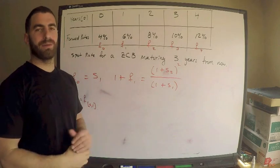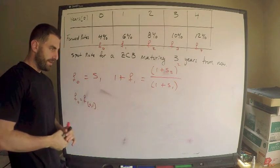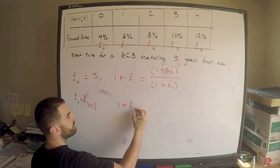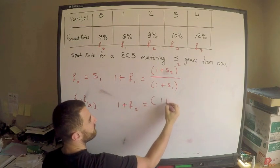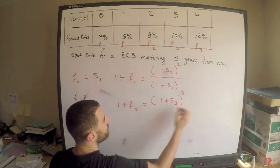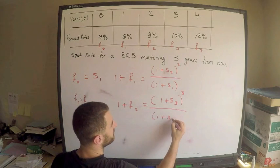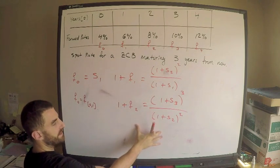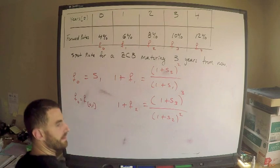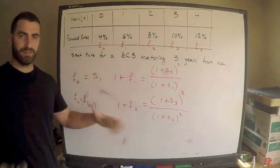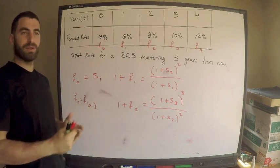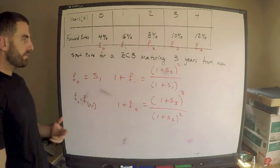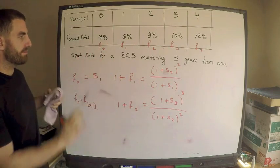Back to the question. Here's the deal — it's kind of an iterative process. I can also say that one plus f₂ is equal to one plus s₃ cubed, over one plus s₂ squared. If you can just remember this part, it will save you a lot of time. In my experience, this is the main thing you need to remember in terms of spot rates and forward rates.